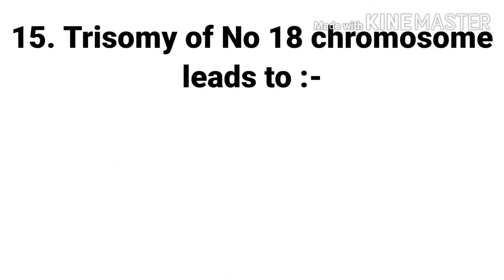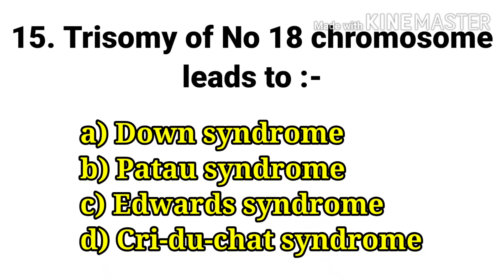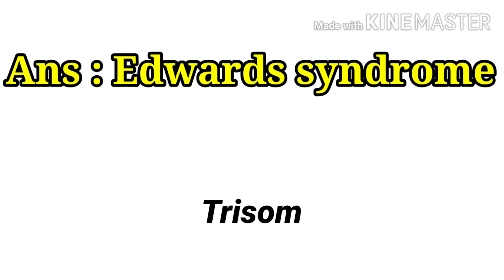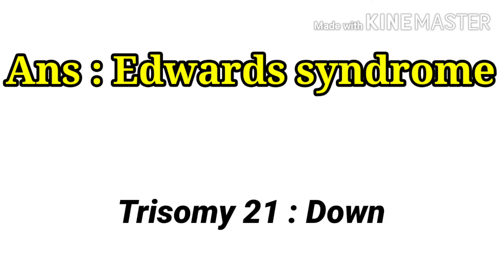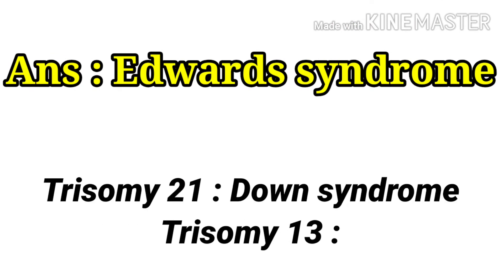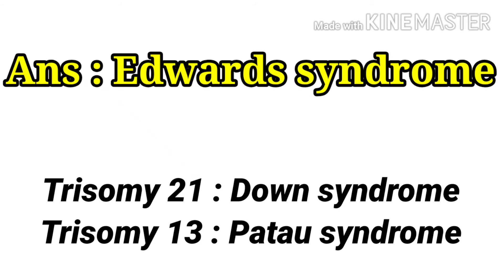The next question: trisomy of chromosome number 18 leads to — options are Down syndrome, Patau syndrome, Edwards syndrome, and Cri-du-Chat syndrome. The answer is Edwards syndrome. Trisomy 21 is Down syndrome and trisomy 13 is Patau syndrome.